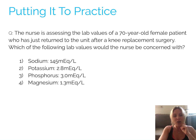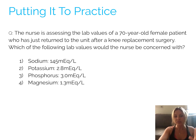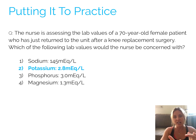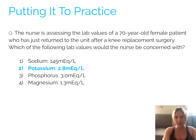Now we can answer the question properly. Looking at answer option two — potassium at 2.8 mEq/L — the question asks which lab value the nurse would be concerned with. Because we memorized the normal range for potassium, we can see that 2.8 is outside the normal range. That is the correct answer. We are concerned with that lab value because 2.8 mEq/L makes that patient hypokalemic. So now we're going to talk about hyper- and hypokalemia.